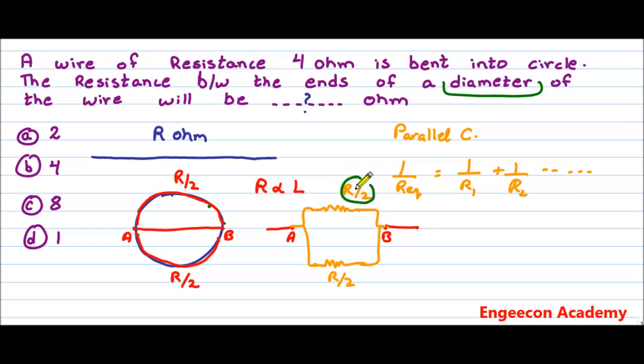So in this case, R1 equals R/2 and R2 equals R/2. So 1 divided by R/2 plus 1 divided by R/2, which can be simplified as 2 plus 2 divided by R.